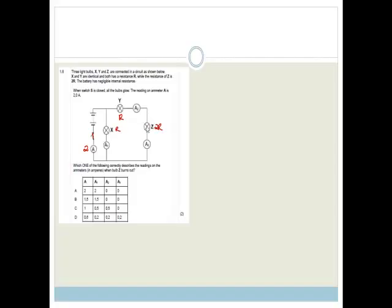So suddenly bulb Z blows out. If that's the case, do you agree that before, the current is going along and it is splitting, and part of the current was going here and part of the current was going here? But now because Z has died, that means there is no current going along this whole part here because this is in parallel. So all of that is gone. So therefore the current in ammeter A2 is 0 and in A3 is 0.